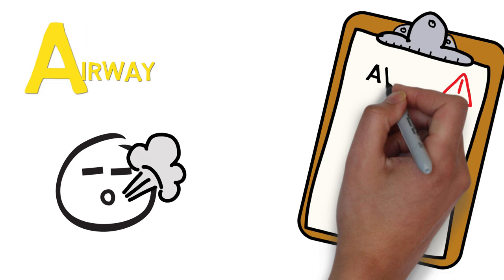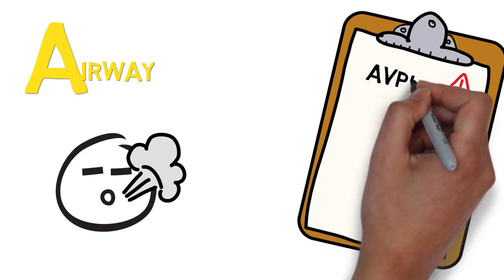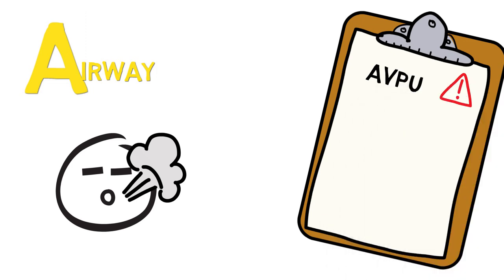Without going into detail too much, you can imagine that if a patient doesn't respond to pain, they probably won't notice they're not able to breathe properly either. So first, check their level of consciousness. Alert, responding to verbal commands, responding to pain, or unresponsive. Check if the mouth is empty, and check for any facial or neurological trauma.